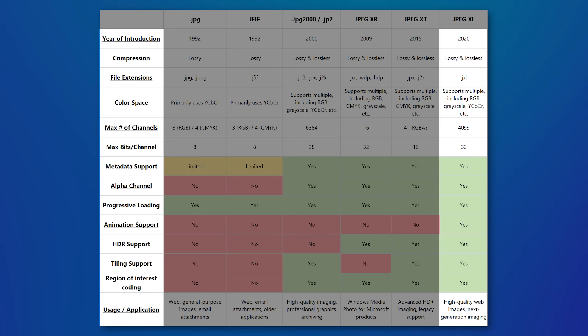I want to talk about the JPEG XL format, which has the extension JXL. JPEG XL is the latest and most capable edition of JPEG. It has features like tiling and region of interest, but it also has stuff like HDR and even animation support. Now JPEG XL is not very well supported at all, but there is some support for it.